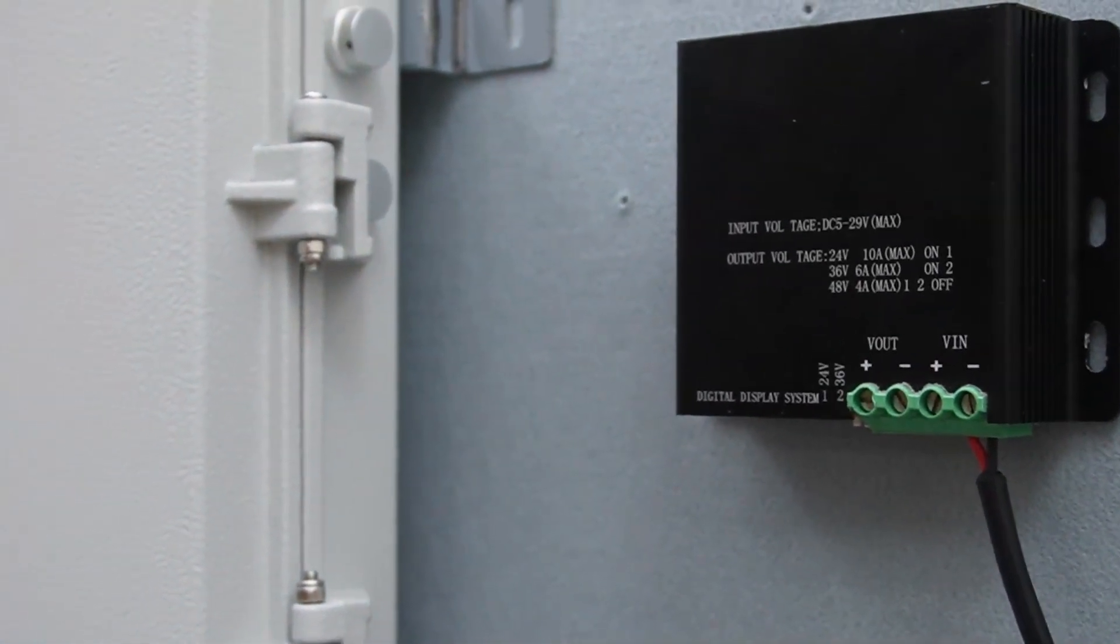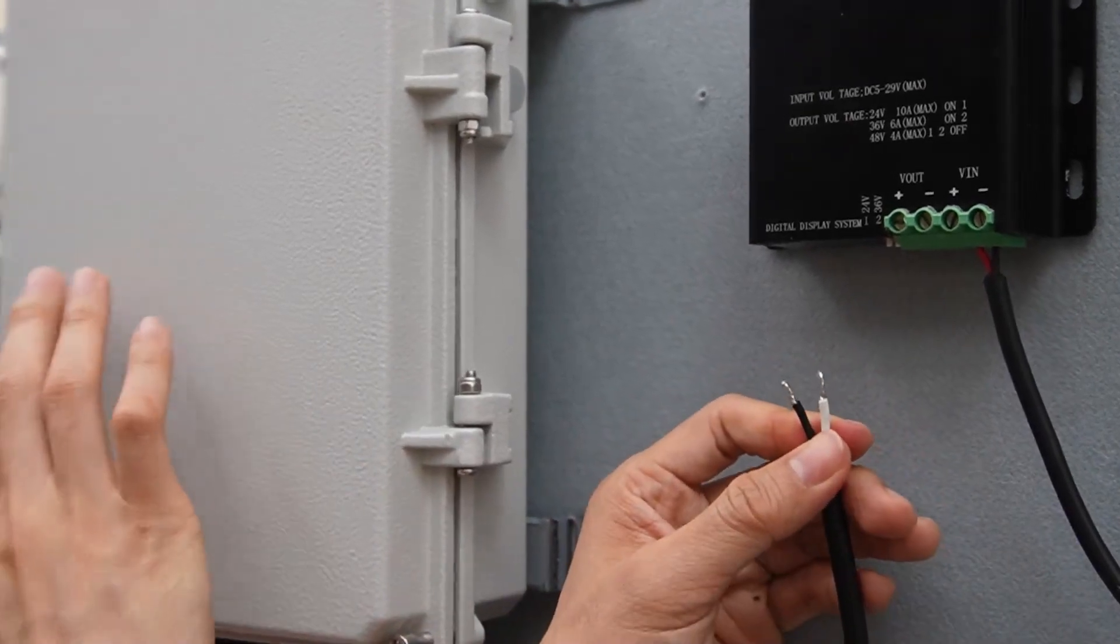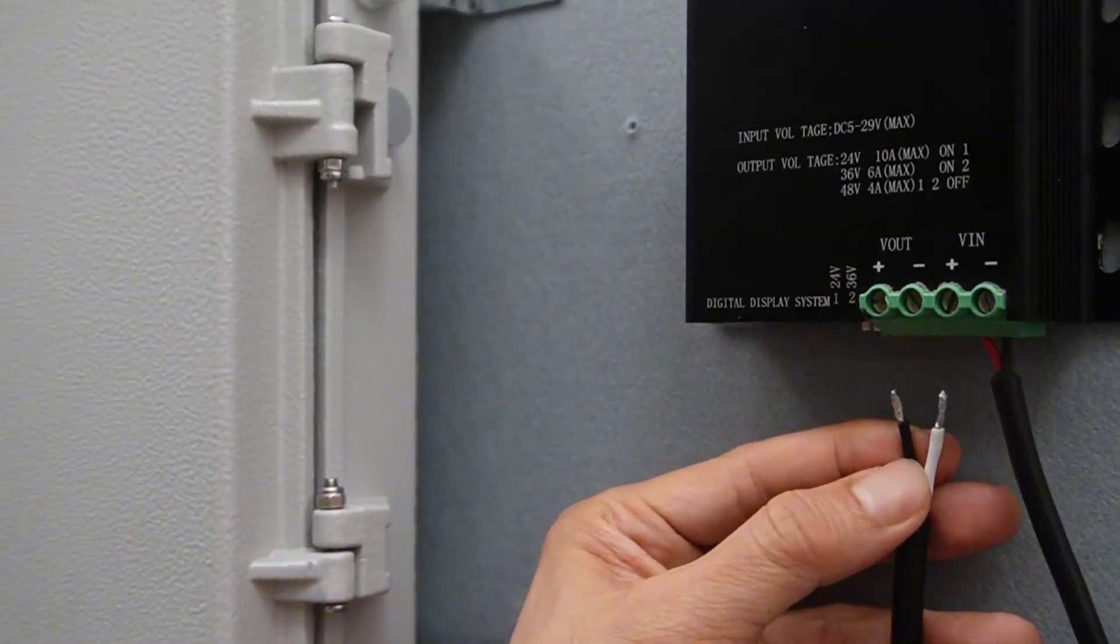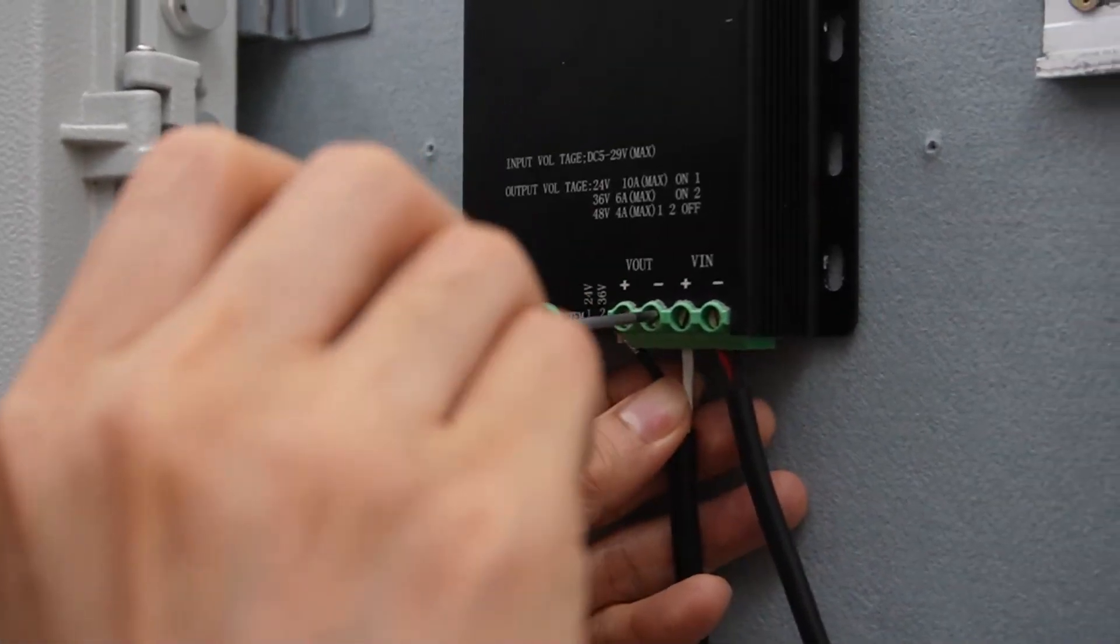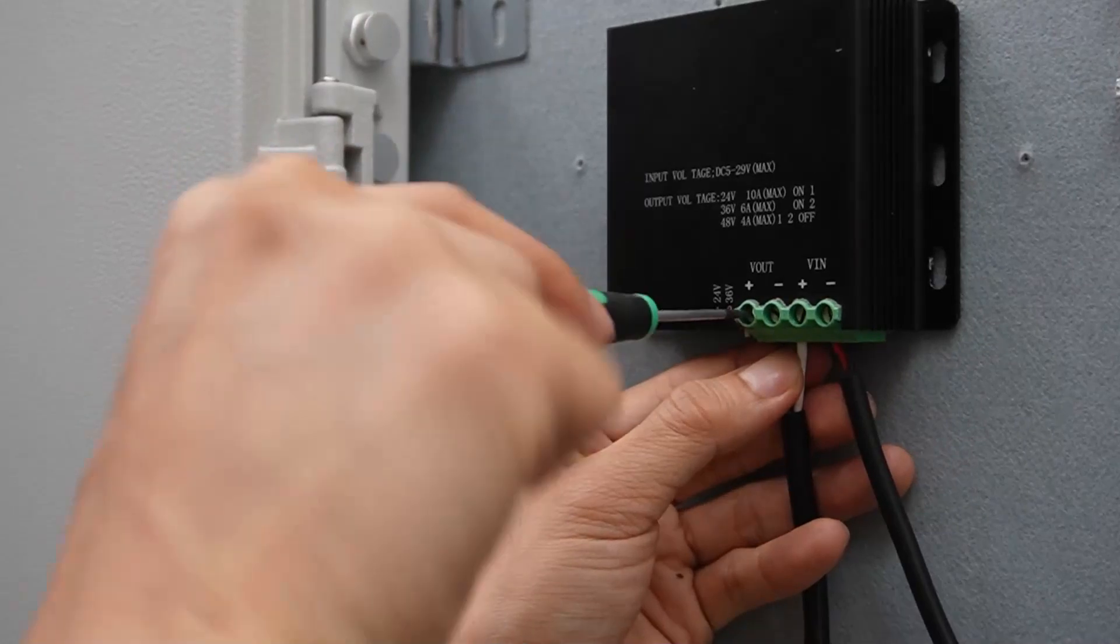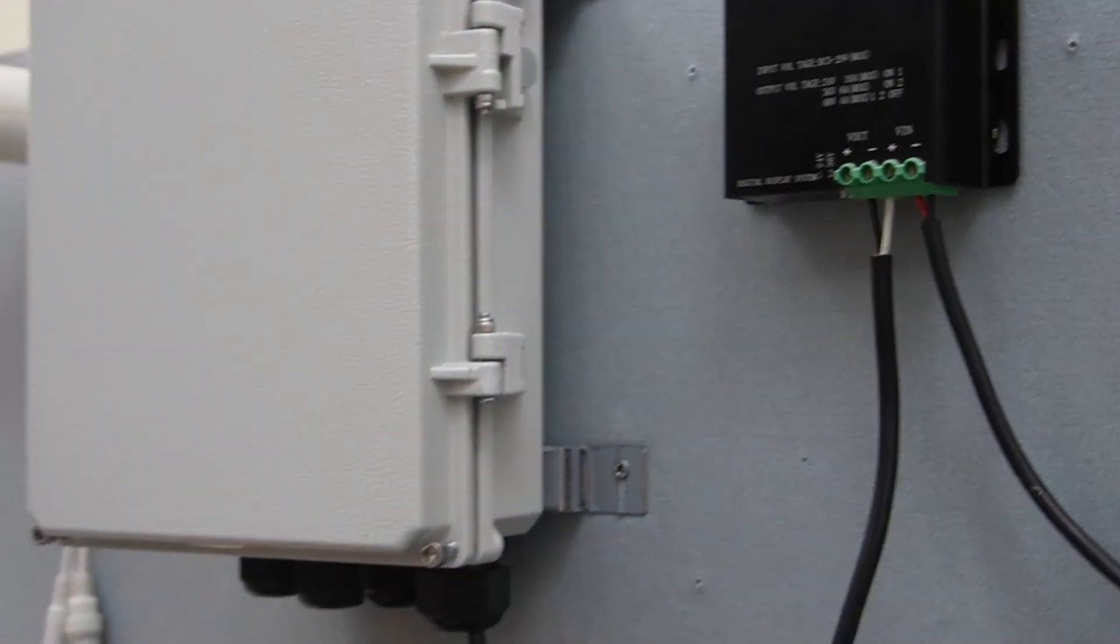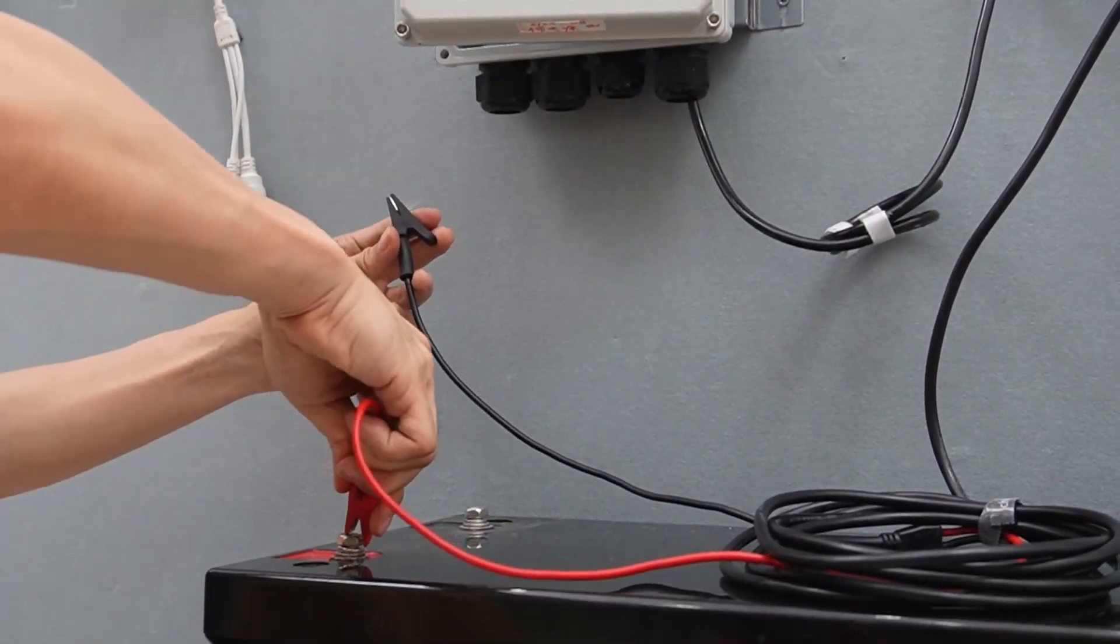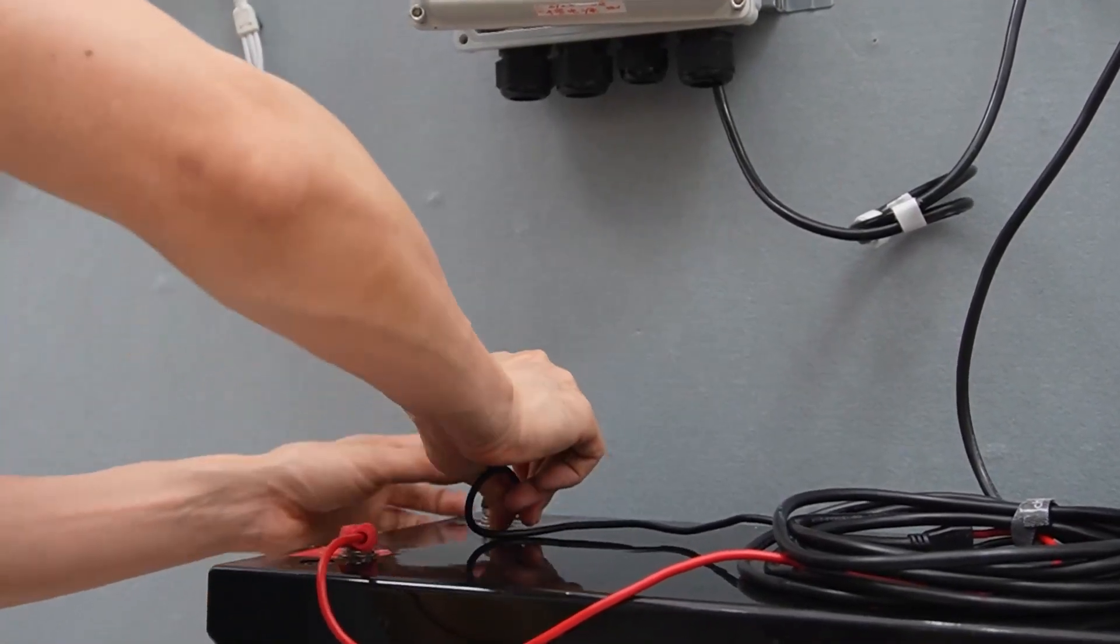Let's connect this outdoor PoE switch to the voltage output of this voltage booster. This is the cable from the outdoor PoE switch. Here, it's a little bit messy. We use the black to stand for the positive and the white to stand for the negative. Now, let's connect this cable to our lithium battery. Here, the red is the positive and the black is the negative.